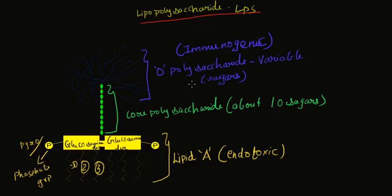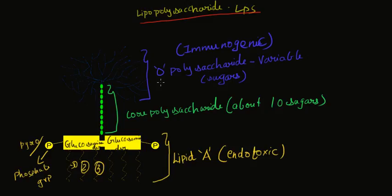The O-polysaccharide is immunogenic because it elicits an immune response. When a gram-negative bacteria enters your body, your immune system produces antibodies against the O-polysaccharide. Certain bacterial cells can change the structure of this O-polysaccharide so that the immune system cannot detect the cell.